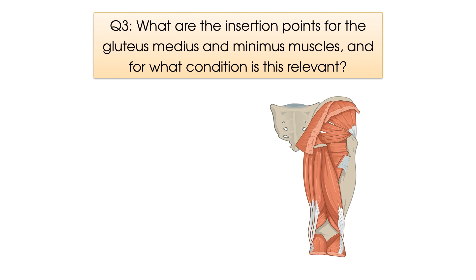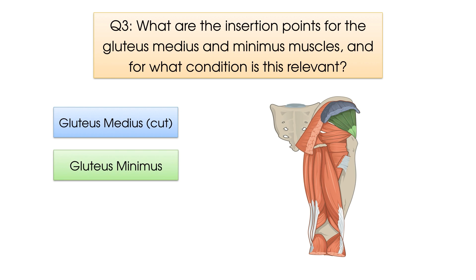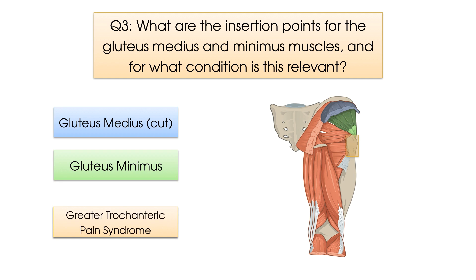The gluteus medius and gluteus minimus muscles insert into the greater trochanter. The relevant condition is greater trochanteric pain syndrome, because one possible feature of this condition is a tendinopathy of these two muscles.